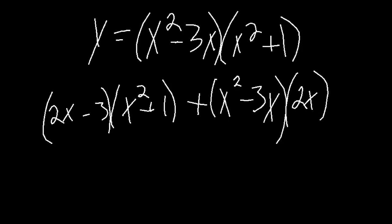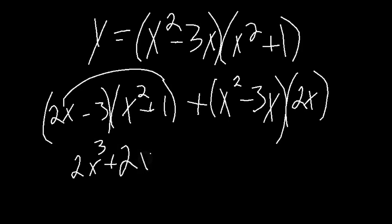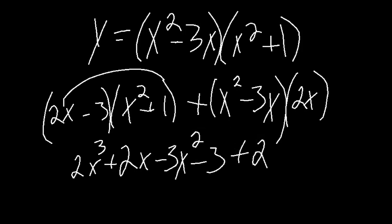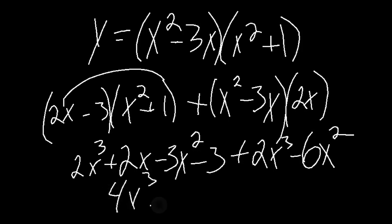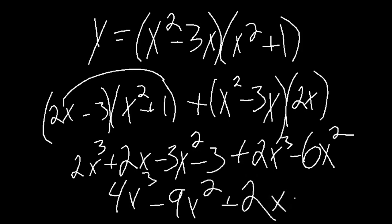Now if we distribute, we get the derivative. So 2x times x squared is 2x cubed, 2x times 1 is 2x, negative 3 times x squared is negative 3x squared, and negative 3 times 1 is negative 3. Then on the second part, x squared times 2x is 2x cubed, and negative 2x times 2x is negative 6x squared. Adding like terms gives us 4x cubed minus 9x squared plus 2x minus 3, and that is our derivative.